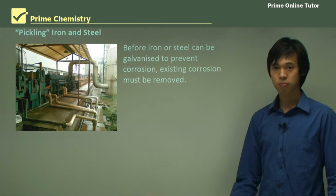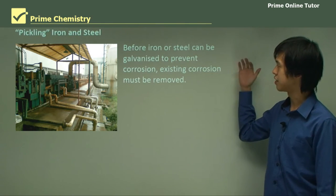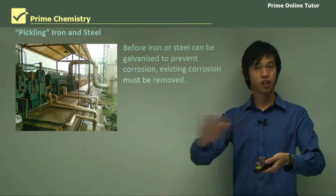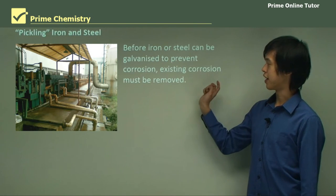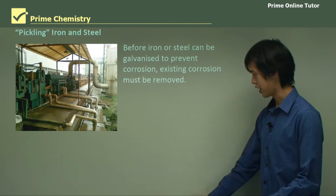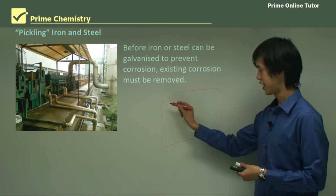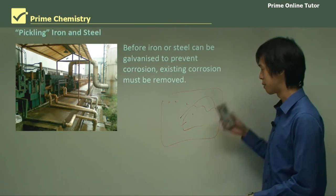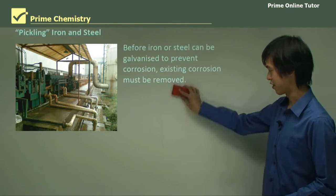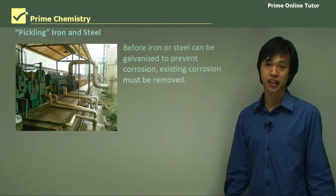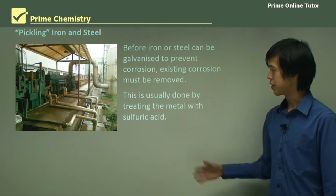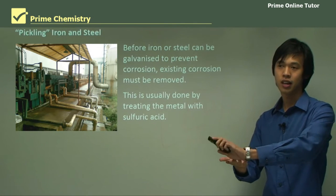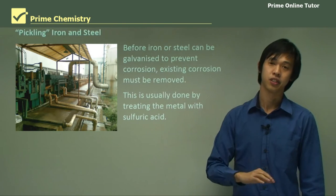Another major application is pickling iron and steel. Before iron and steel can be galvanized — for example, BlueScope Steel makes galvanized steel by putting zinc over the top to protect it — the existing corrosion needs to be removed. If you have rust on a piece of metal, you need to remove that layer first; otherwise the galvanizing won't stick, and you'll get no protection. We treat the metal with sulfuric acid to dissolve away the outer layer, leaving a clean surface for the galvanizing.